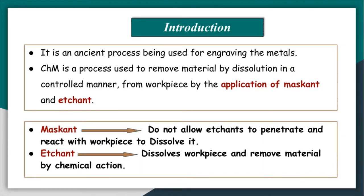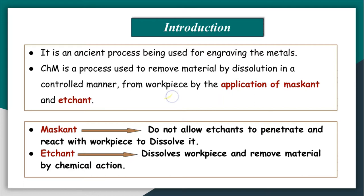Chemical machining is an ancient process and has been used for engraving metals. Chemical machining is a process used to remove material by dissolution action in a controlled manner from the work piece, with the help of masking and an etchant.